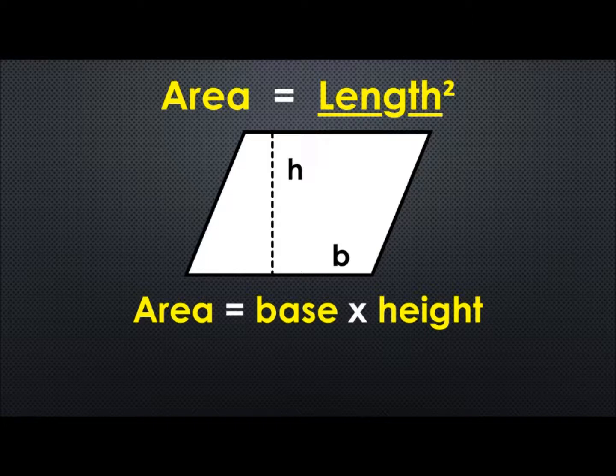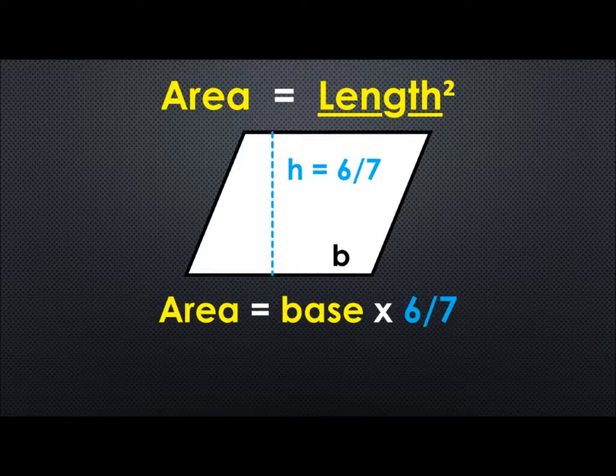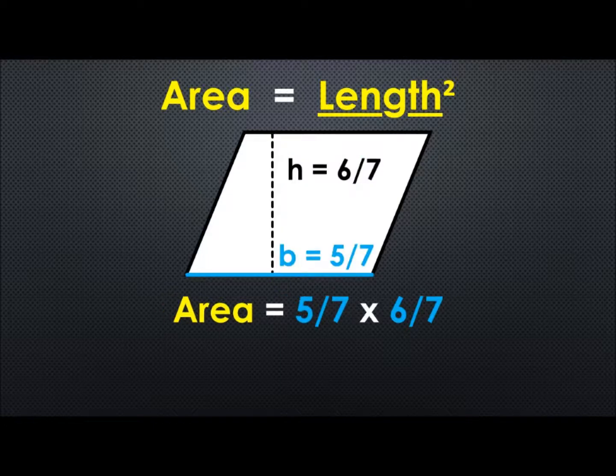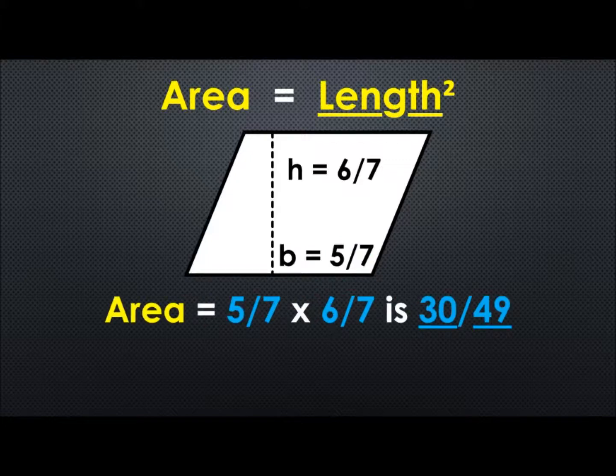Let's look at another example. This time let's use fractions. Again we have our imaginary plumb line. You might hear other people say it. So we have 6 divided by 7. That's our height. The base we have 5 over 7. So 5 over 7 times 6 over 7. That gives us 30 over 49.